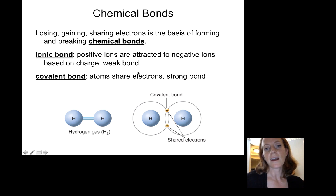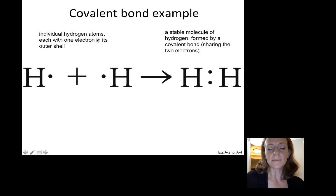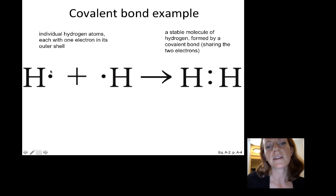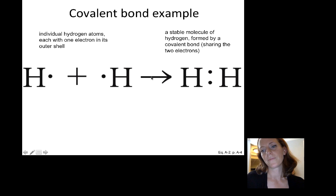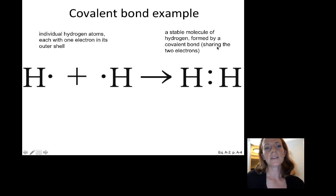Covalent bonds are much stronger, where electrons equally hover around the shells of the bonded atoms. For ionic bonds, the ions are just attracted to each other; for covalent bonds, they're sharing — living together — it's a tighter bond and harder to break up. Here's an example of a covalent bond: a hydrogen atom has a proton in its core and a single electron in its outer shell, leaving space for a second electron. If another hydrogen is nearby, those electrons find each other's empty spaces and share, forming hydrogen gas — H2 — a covalent bond.